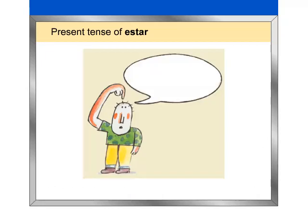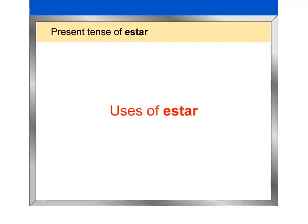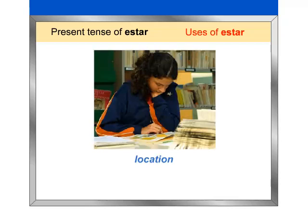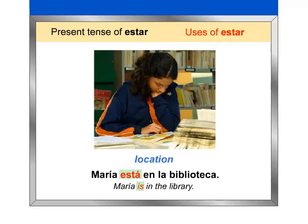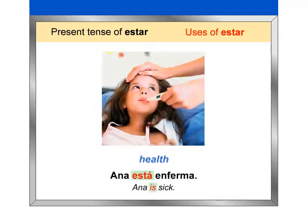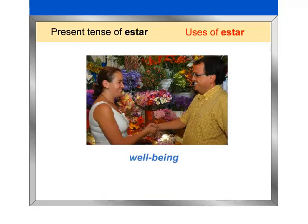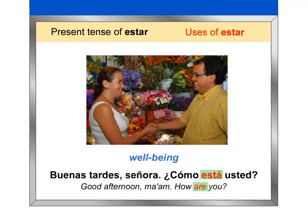Bien. Now you know both Spanish verbs that mean 'to be', but the question remains: when do you use ser and when do you use estar? Uses of estar: although both words mean 'to be', they have different uses. Estar is used to talk about location — María está en la biblioteca. Health — Ana está enferma. And well-being, as you saw in Lesson 1: Buenas tardes, señora. ¿Cómo está usted?